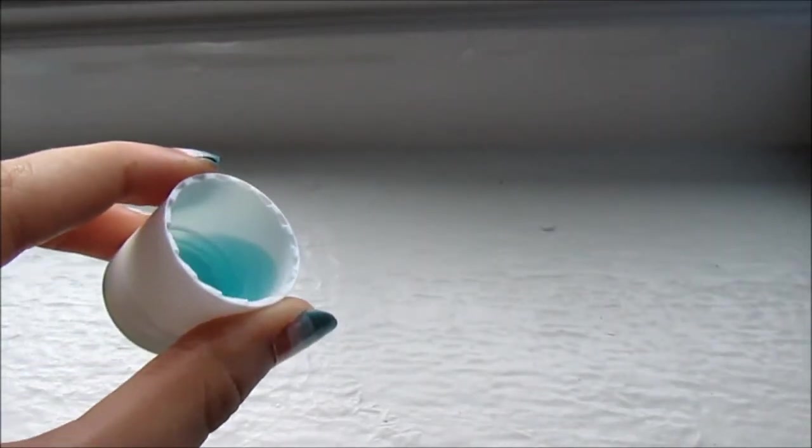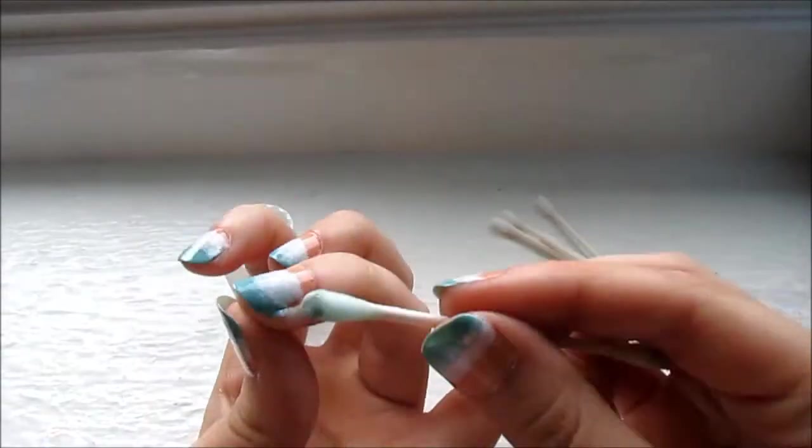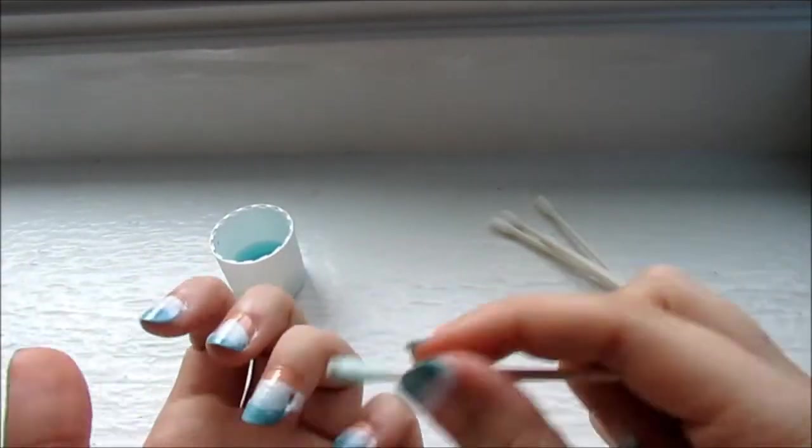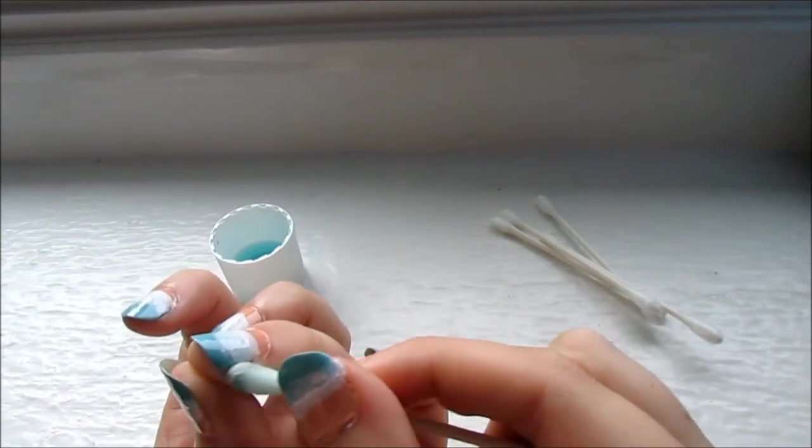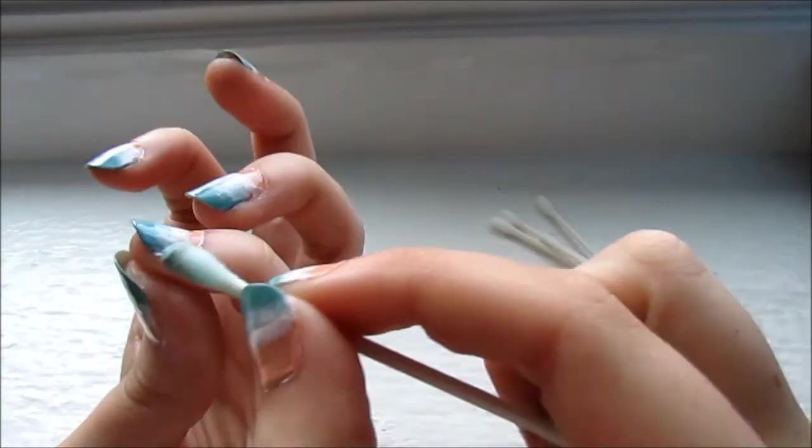Next grab your nail polish remover and pour it in the cap and some q-tips. The last step is to dip the q-tip into the nail polish remover and clean up any mistakes you have made.